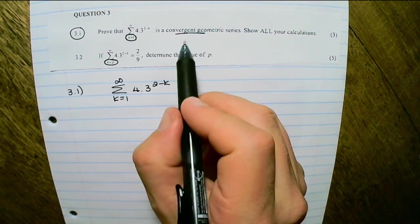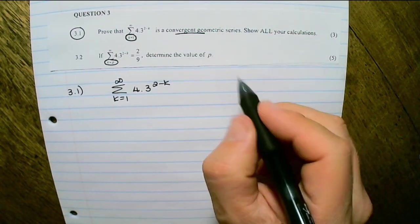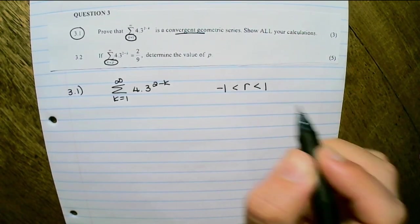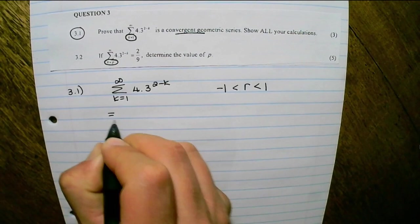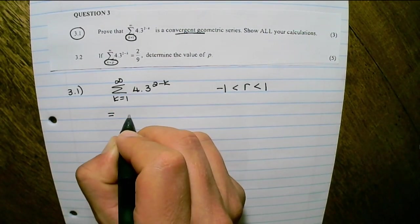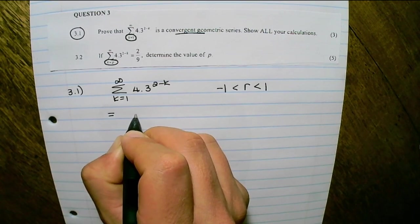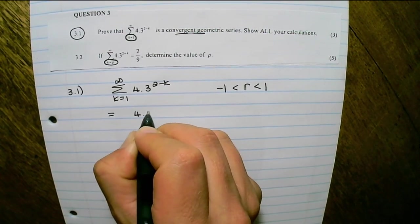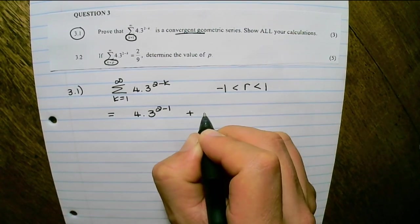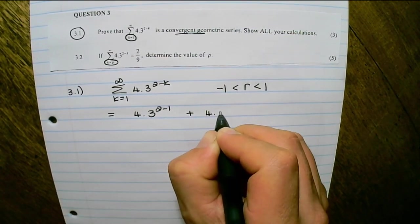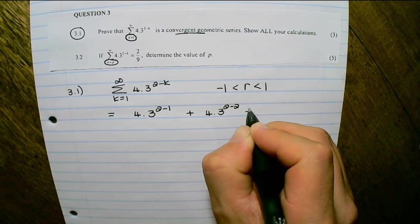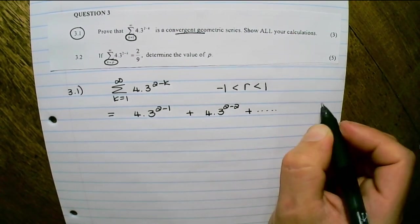In order to prove that it is a convergent geometric series, we need to find a ratio that is between negative 1 and 1. And how I find the ratio is, I need at least the first two terms. So the first term would be 4 times 3 to the power of 2 minus 1, and the second term would be 4 times 3 to the power of 2 minus 2. And this pattern would continue infinitely.